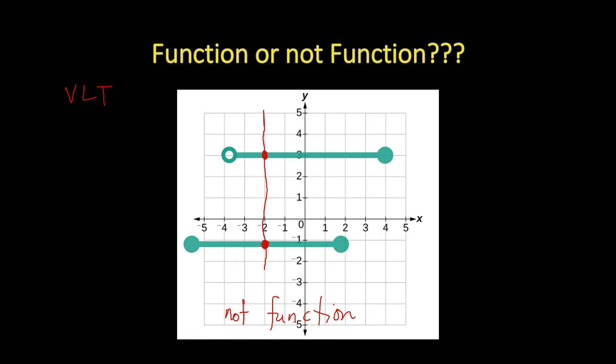You might be asking what this open point represents. This open or hollow point means that this point is not part of your domain and range — so it's not included. On the other hand, this shaded point indicates that this point is included as part of your graph, as part of your domain and range values.